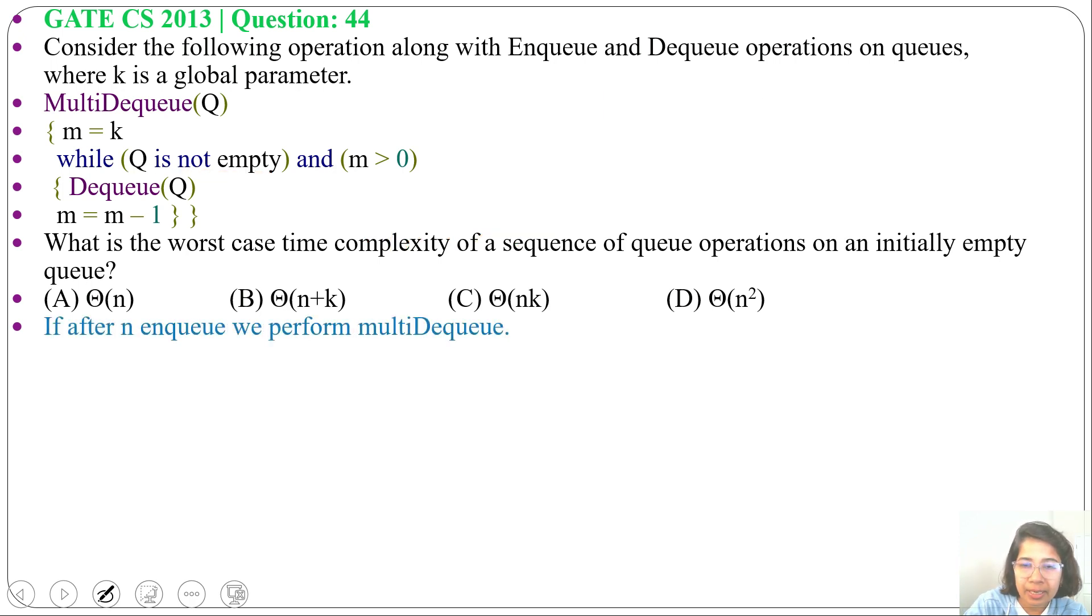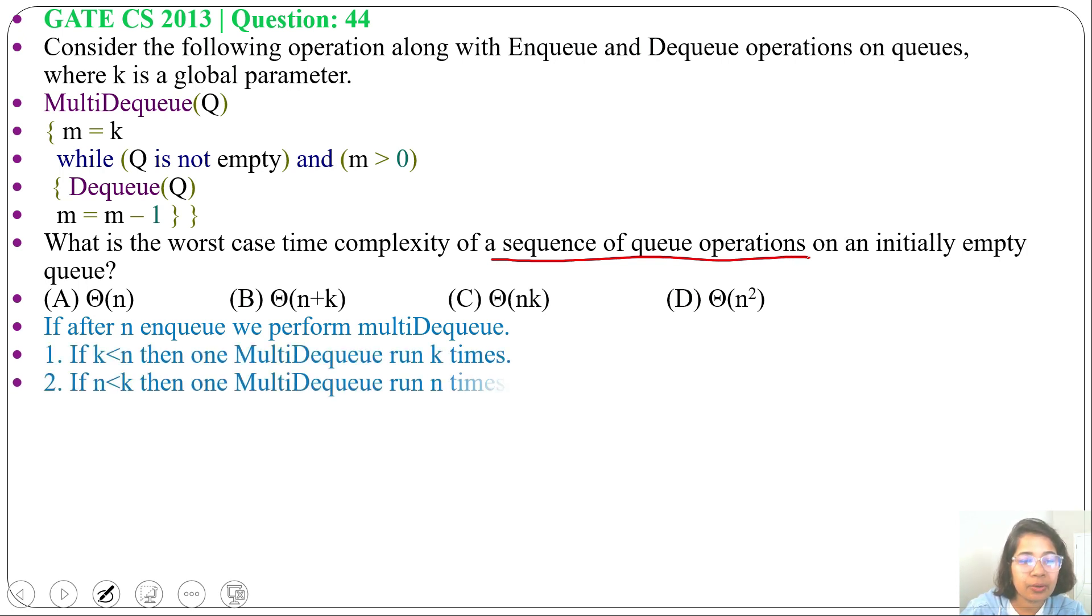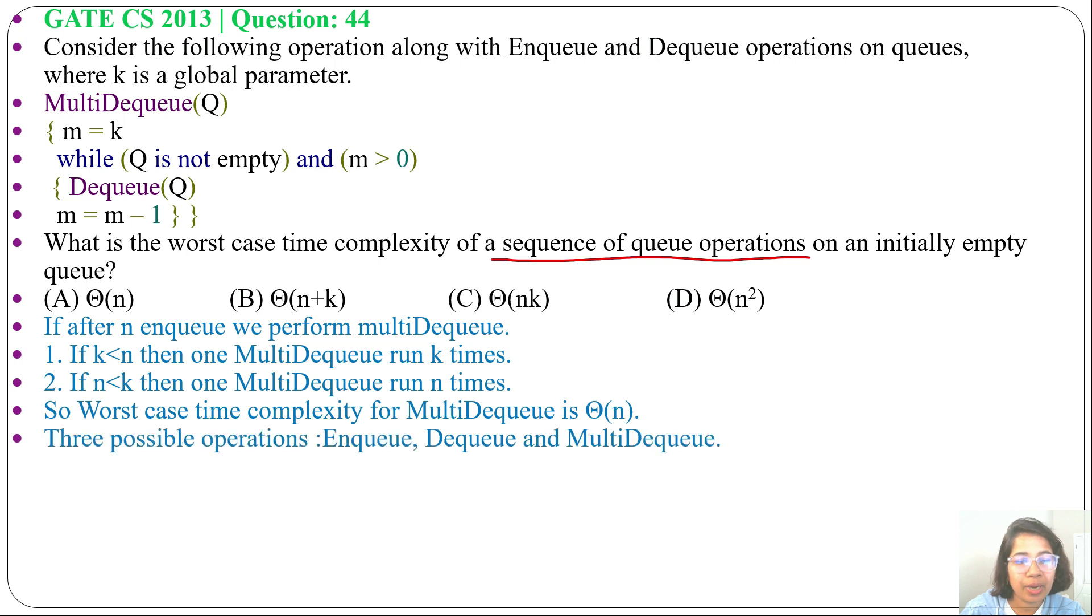But in question, it's asking about sequence of queue operations, and there are three queue operations: enqueue, dequeue, and multi-dequeue. Multi-dequeue itself will run theta of N time or theta of K time, based on whether K value is less than N or N value is less than K. But with multi-dequeue, we have to do enqueue and dequeue.